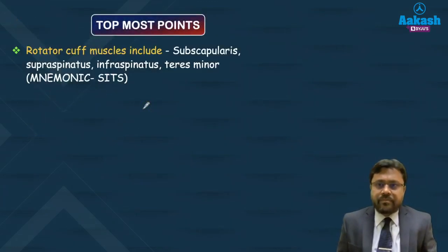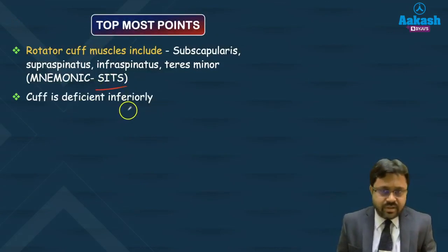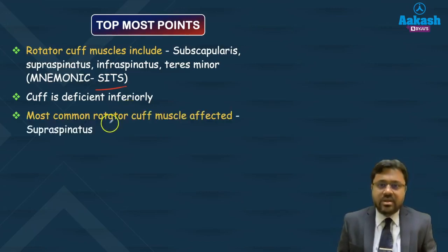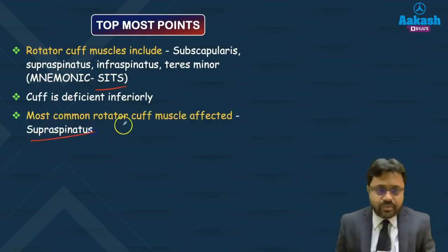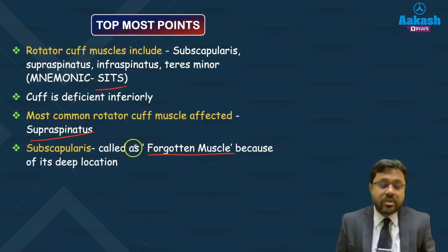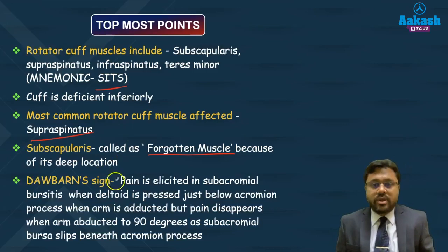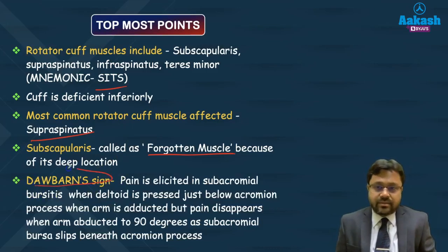To sum up: the rotator cuff muscles are remembered by the mnemonic SITS. The rotator cuff is deficient inferiorly, which is why shoulder dislocations occur most commonly in the inferior direction. The most commonly affected rotator cuff muscle is the supraspinatus. Subscapularis is also termed the 'forgotten muscle' because of its deep location.